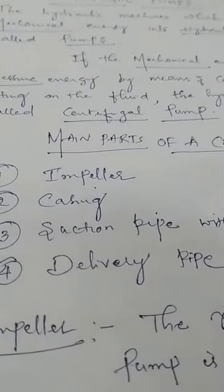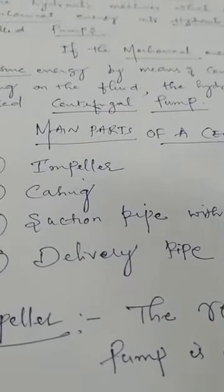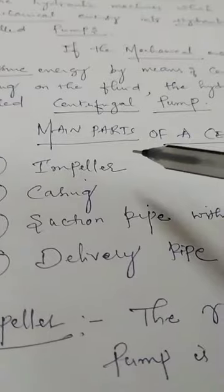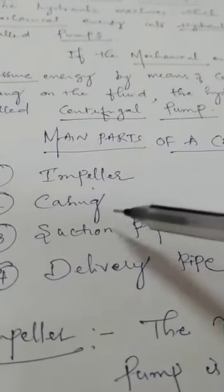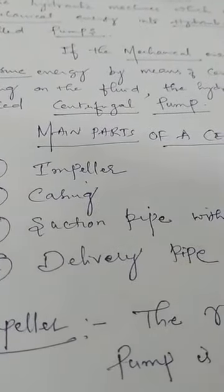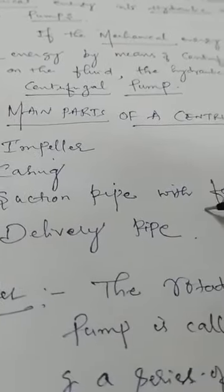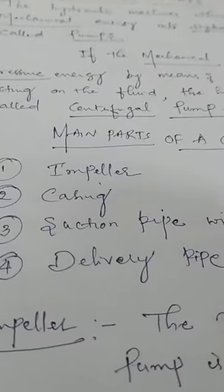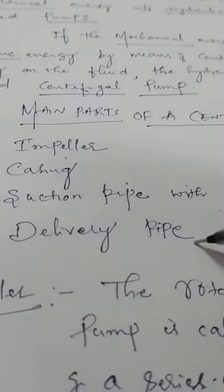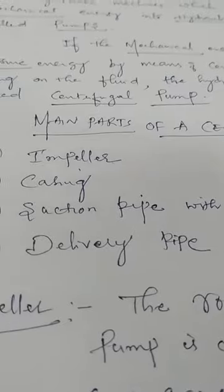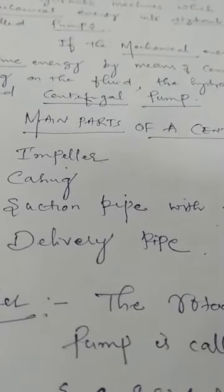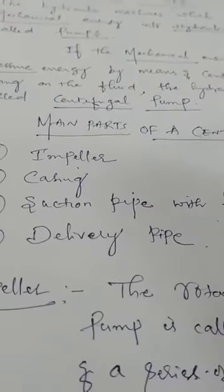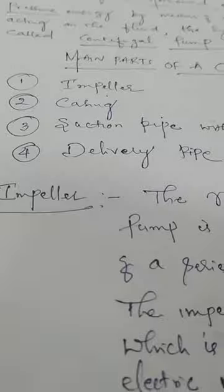Now let us look at the main parts of a centrifugal pump. There are four major parts: one is the impeller, second is the casing, third is the suction pipe with foot valve and strainer, and the last part is the delivery pipe. Let us discuss them one by one.